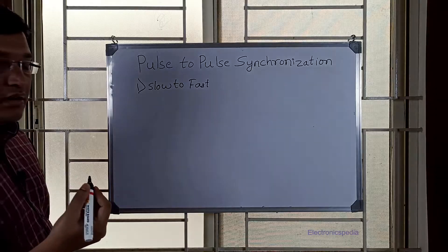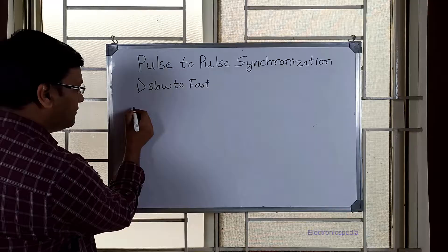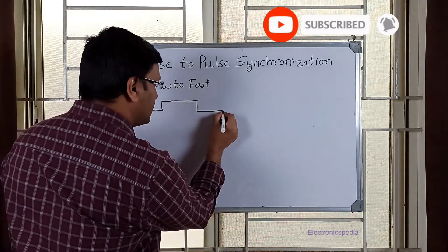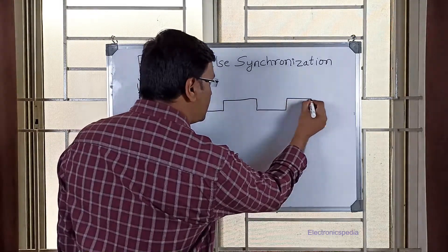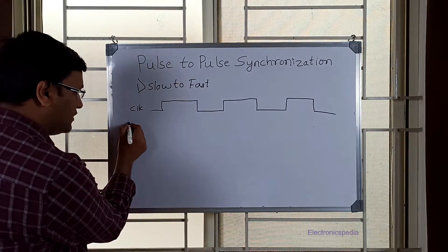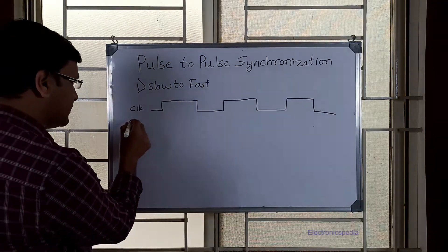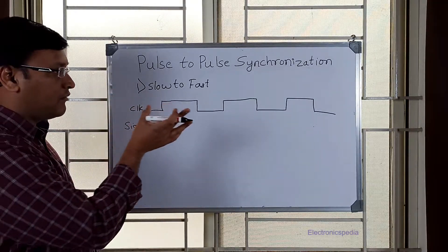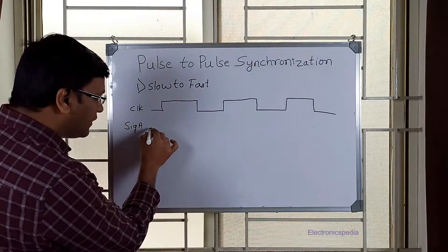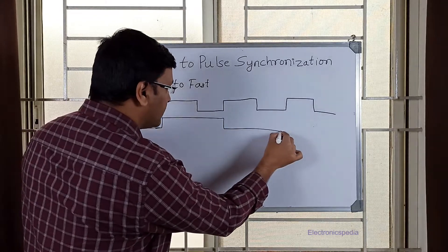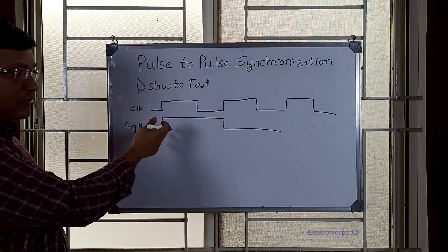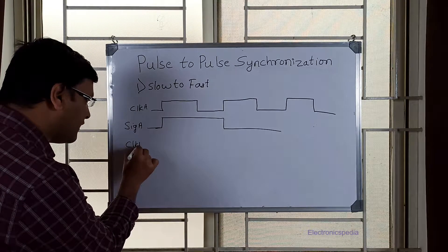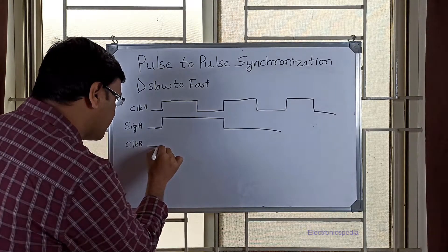Let me draw a clock waveform. This is my slow clock. And I have a signal A, which is a kind of pulse. A pulse is essentially a signal which is active for only one clock cycle — one clock duration. This is my pulse. Now I want to transfer this signal from clock A, which is the slower clock, to clock B, which is the faster clock.